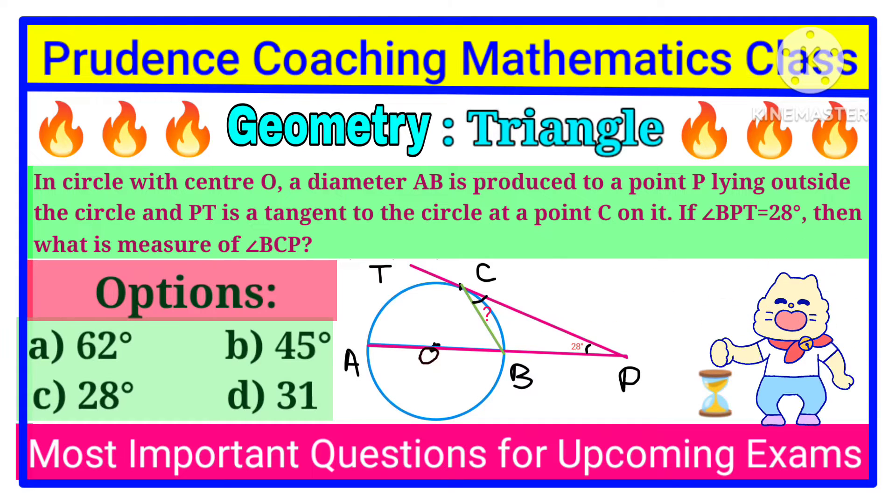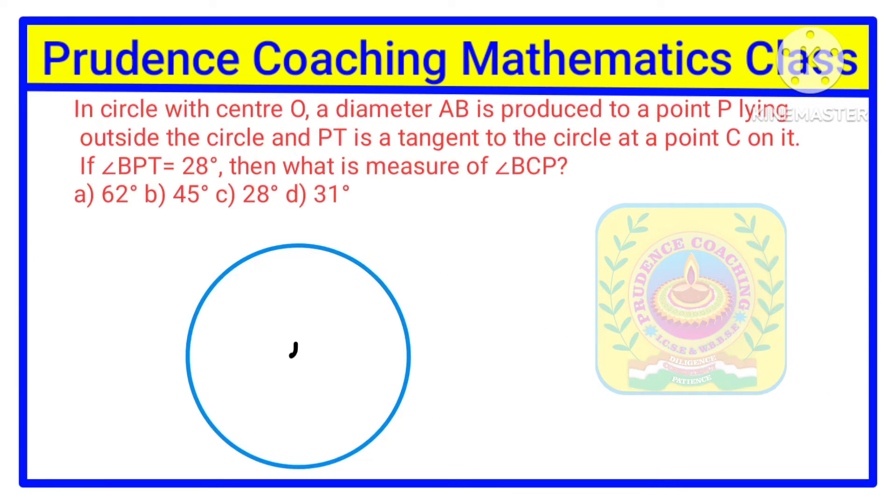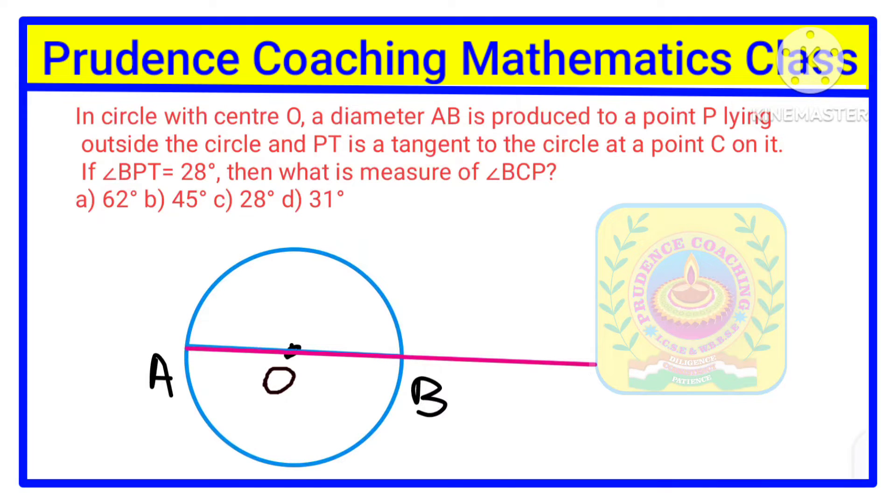In a circle with center O, let us draw a diameter AB. This diameter AB is extended to a point P lying outside the circle.